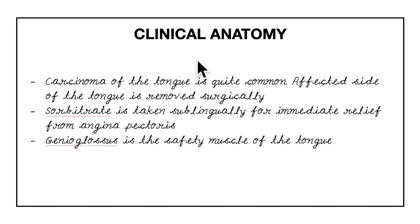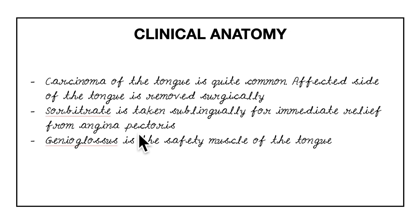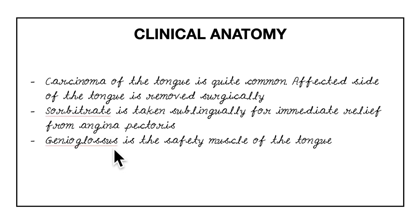Now let's look at the clinical anatomy of the tongue. Carcinoma of the tongue is quite common, and the affected side is removed surgically. Sorbitrate is taken sublingually for immediate relief from angina pectoris, as it is absorbed quickly due to the rich blood supply of the tongue. The genioglossus is the safety muscle of the tongue because if it is paralyzed, the tongue will fall back onto the oropharynx and block the airway.